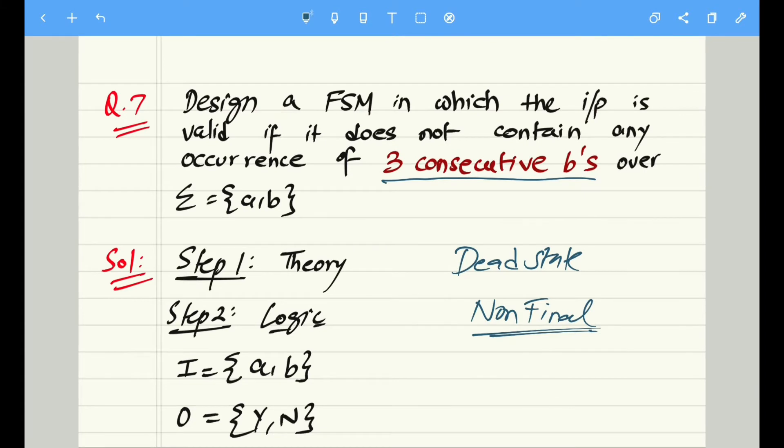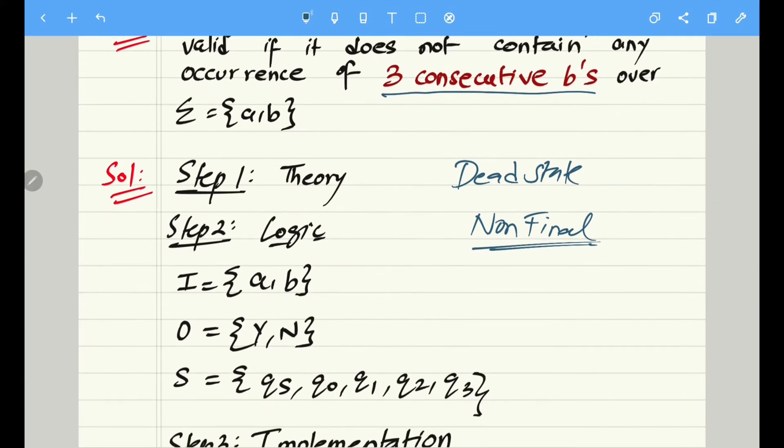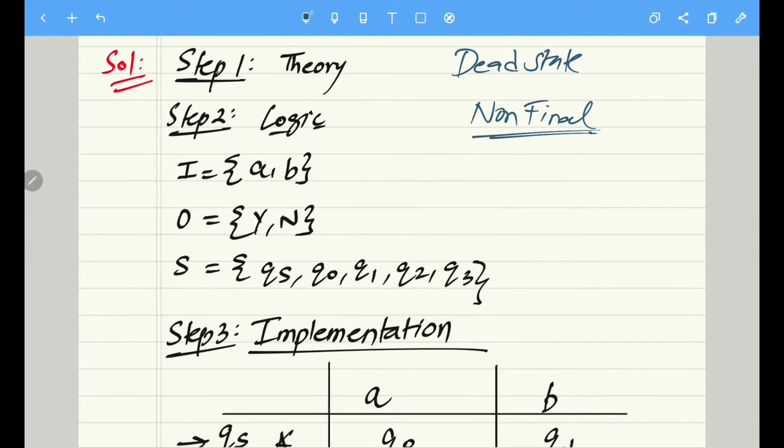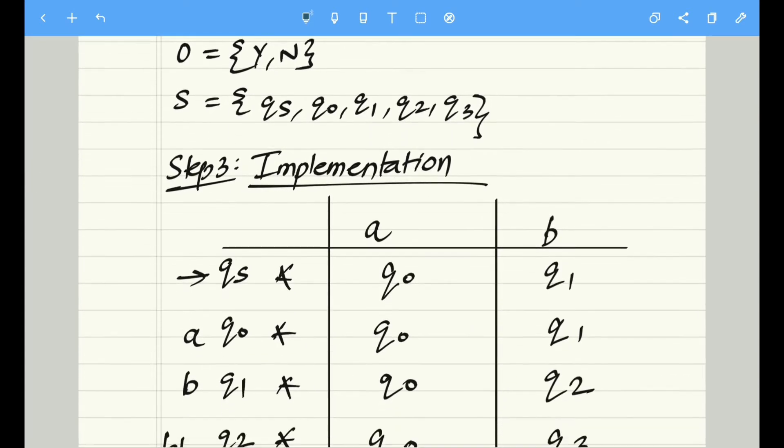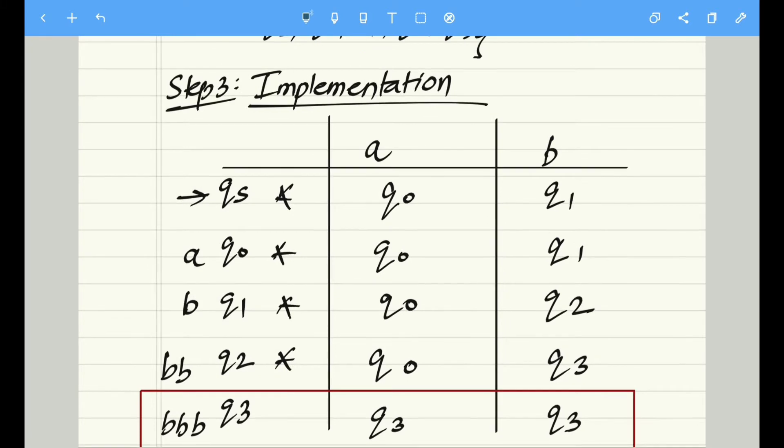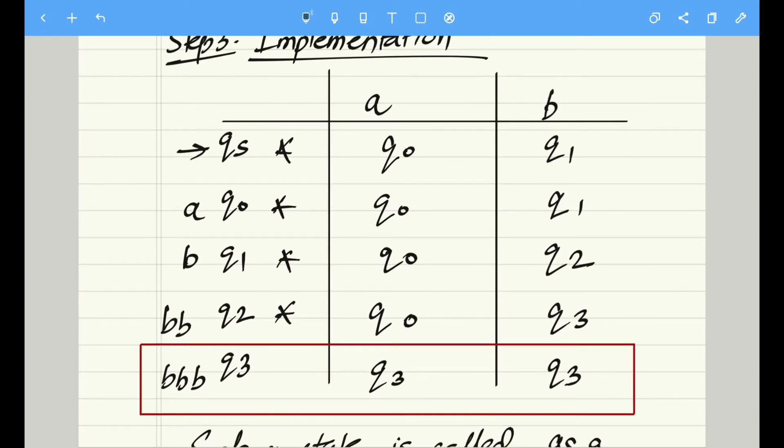So let's read the question once again. It mentions that the input is valid if it does not contain any occurrence of three consecutive b's. So we are sure that as soon as there is an occurrence of three consecutive b's, that becomes my non-final state. Other than that, whatever states are present, all those states are my final states.